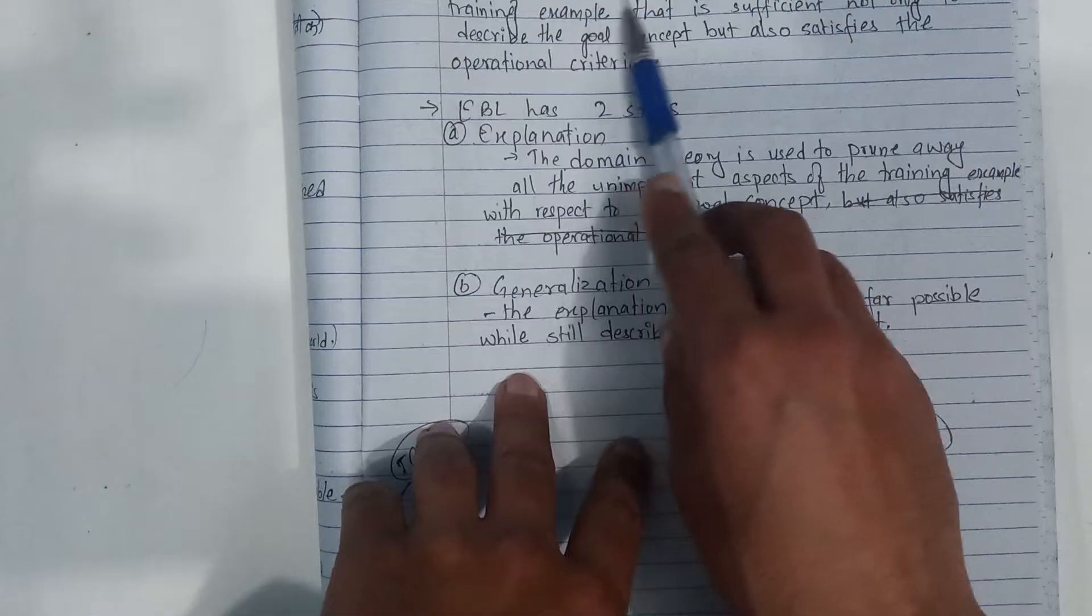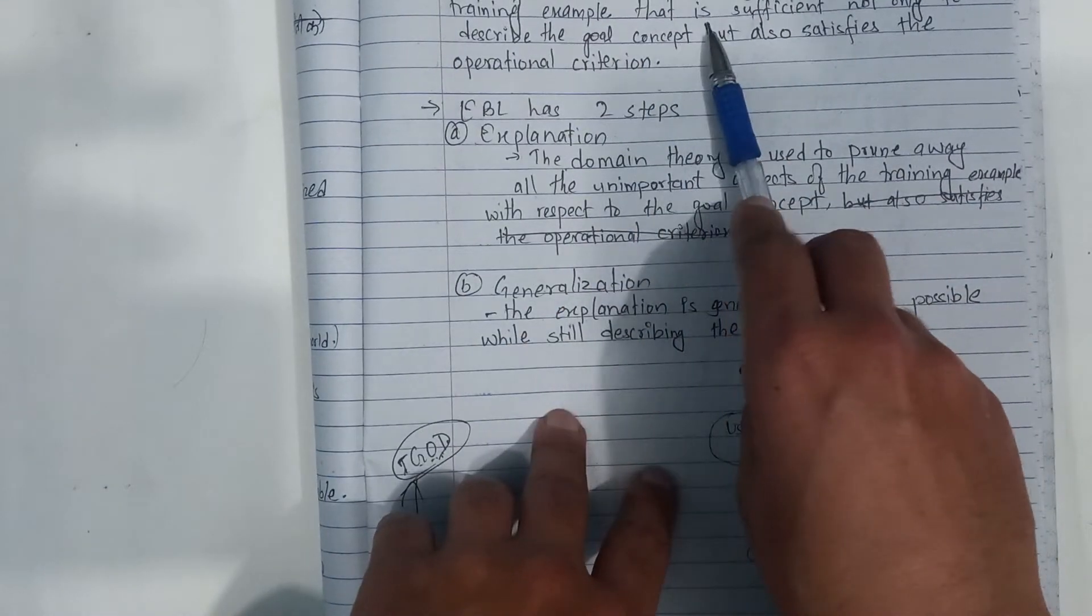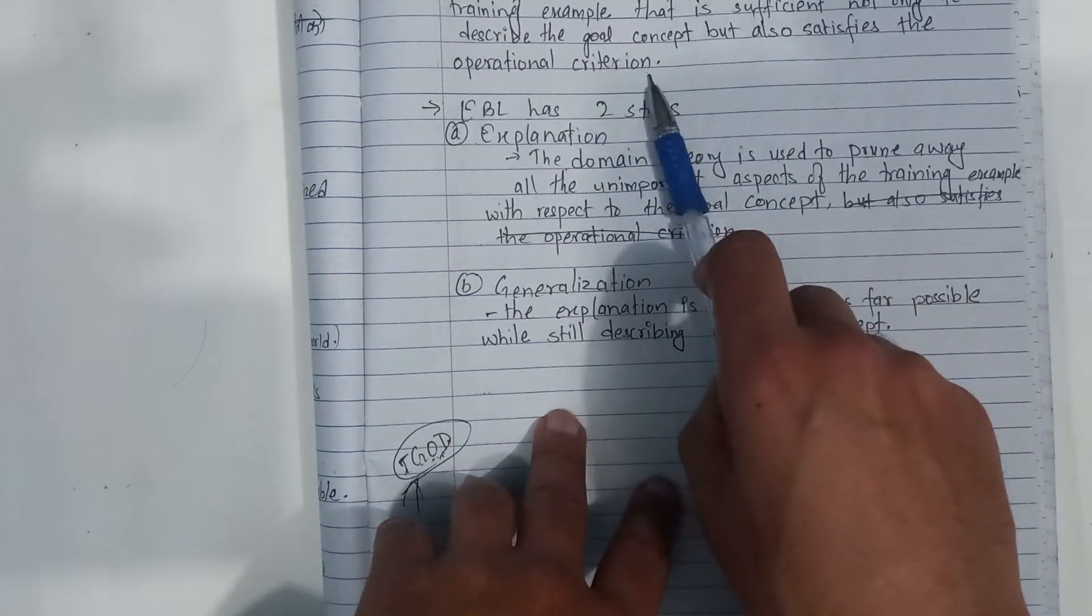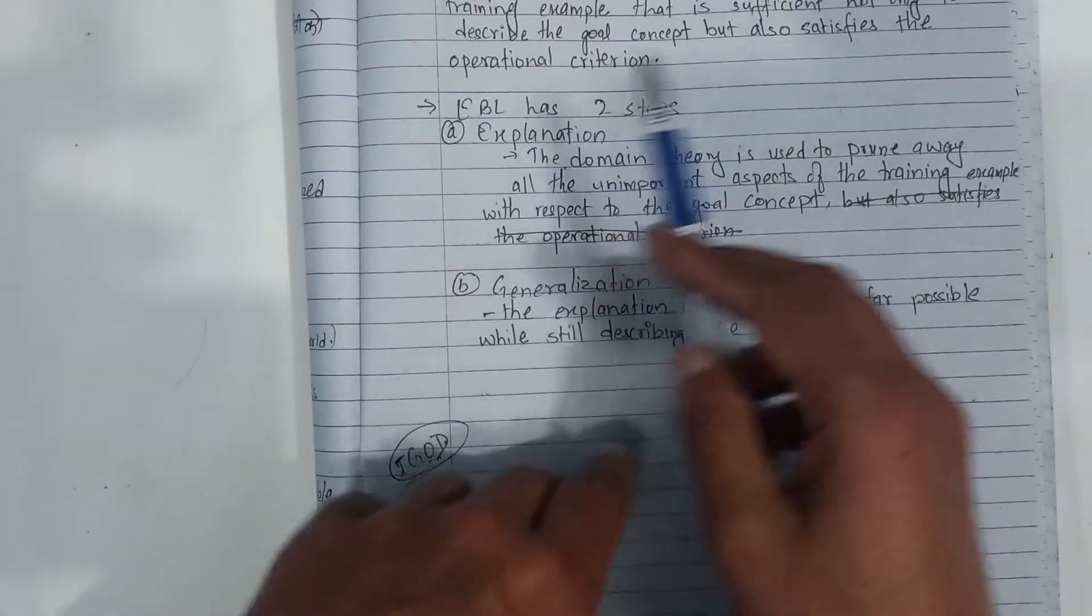Okay, so from this explanation based learning computes a generalization of the training example that is sufficient not only to describe the goal concept but also satisfies the operational criteria.